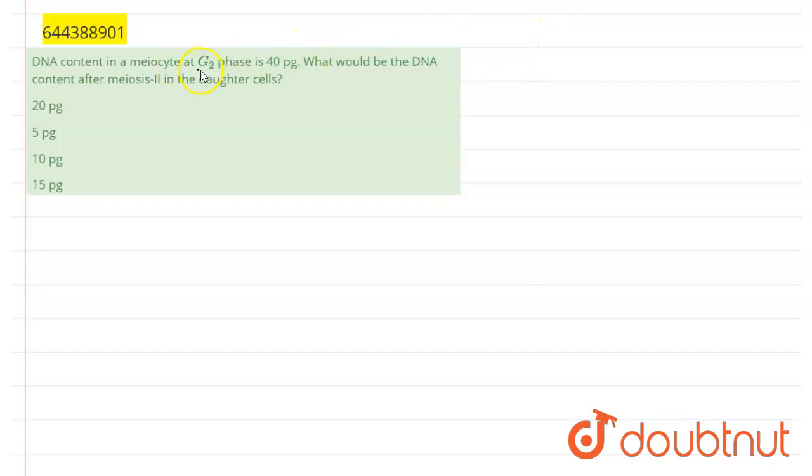DNA content in a meocyte at G2 phase is 40 picograms. What would be the DNA content after meiosis 2 in the daughter cells? This G2 phase is also known as the preparatory phase where the cells do not divide.